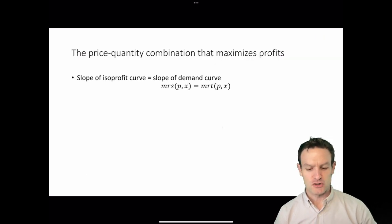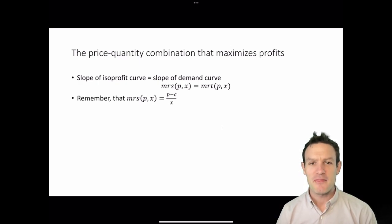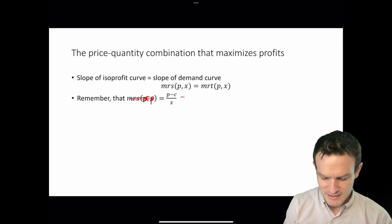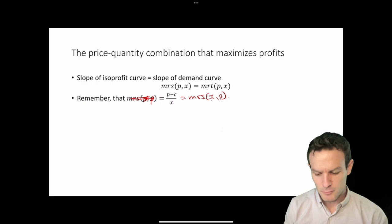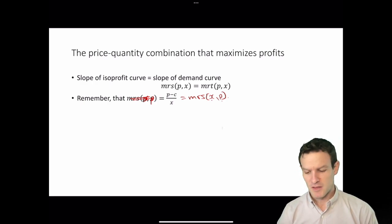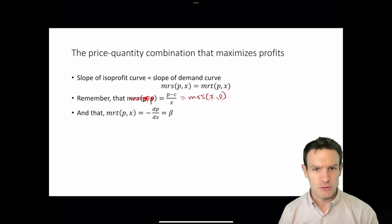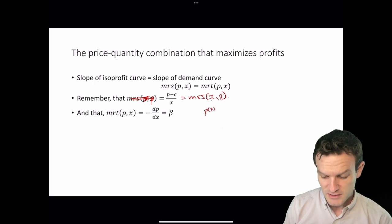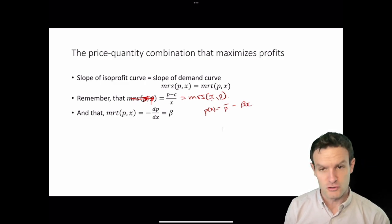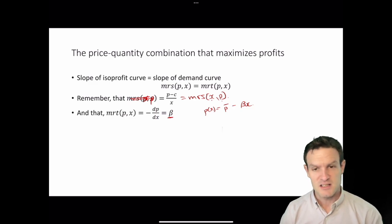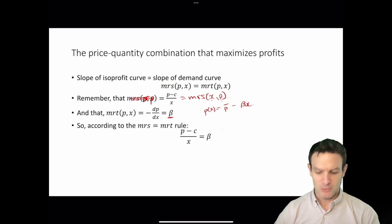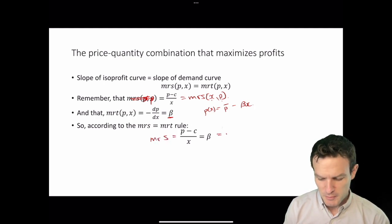When we think through the slope of the isoprofit curve equal to the slope of the demand curve, the marginal rate of substitution MRS(X,P) equals (P minus C) all over X. The marginal rate of transformation equals minus dP/dX of the demand curve. Since the demand curve is P(X) = P-bar minus beta·X, taking the first derivative with respect to X and finding its negative gives MRT equal to beta. So when we set MRS equal to MRT, we get (P minus C) over X equals beta.